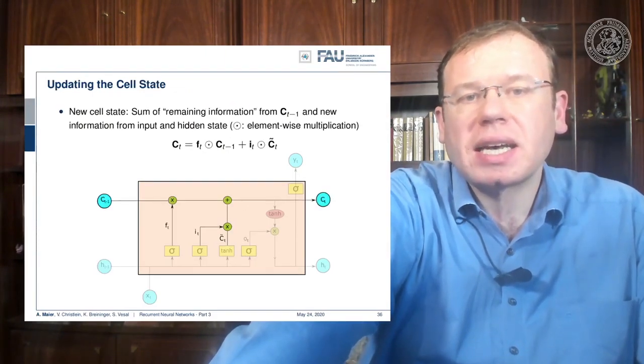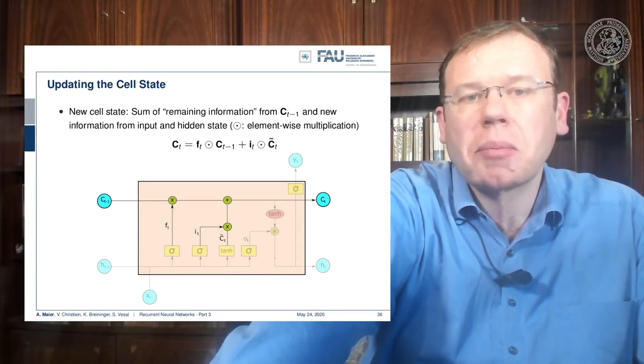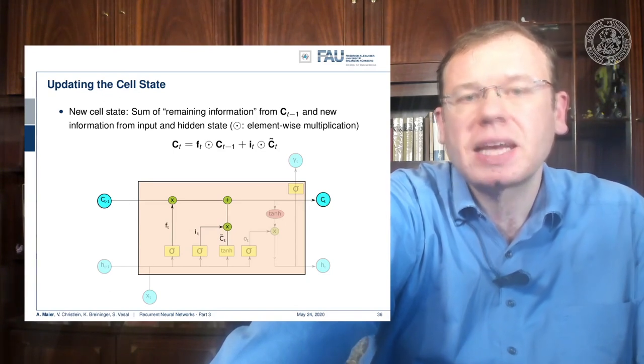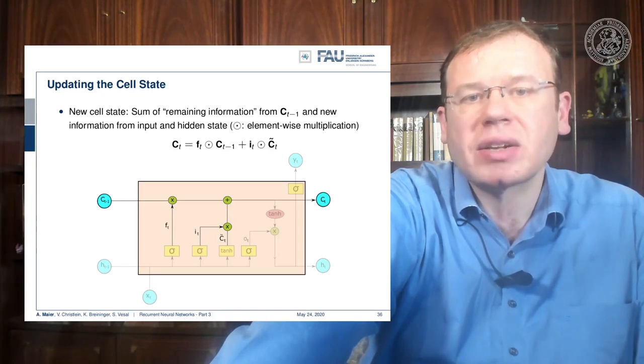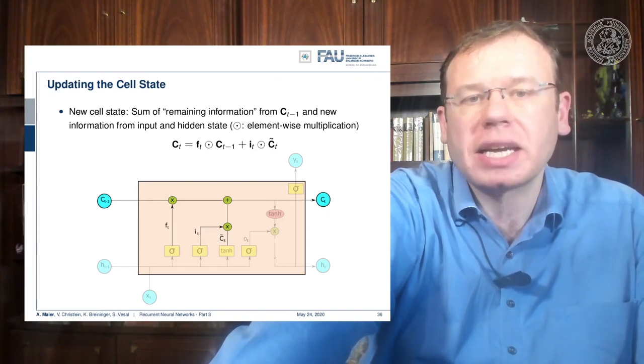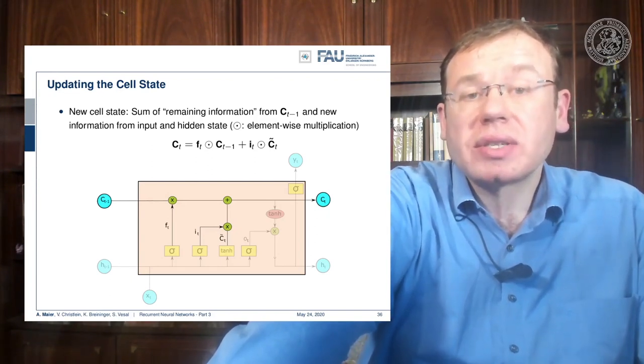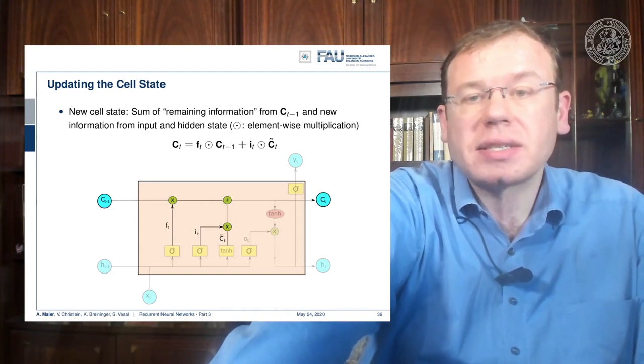Now we update, as we've just seen, the complete update for the cell state is going to be a pointwise multiplication with the forget gate of the previous state. Then we add the elements of the update cell state that have been identified by IT with a pointwise multiplication. So you see the update of the cell state is completely linear—only multiplications and additions.